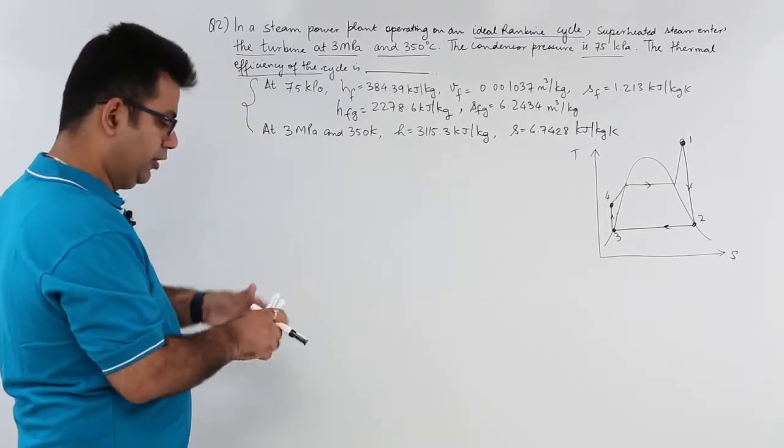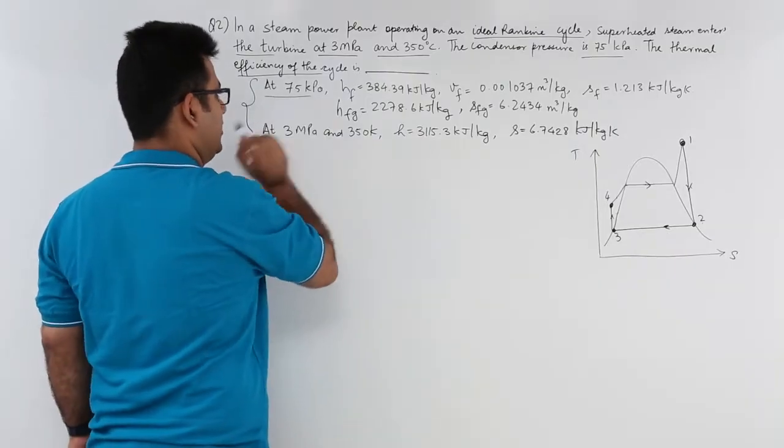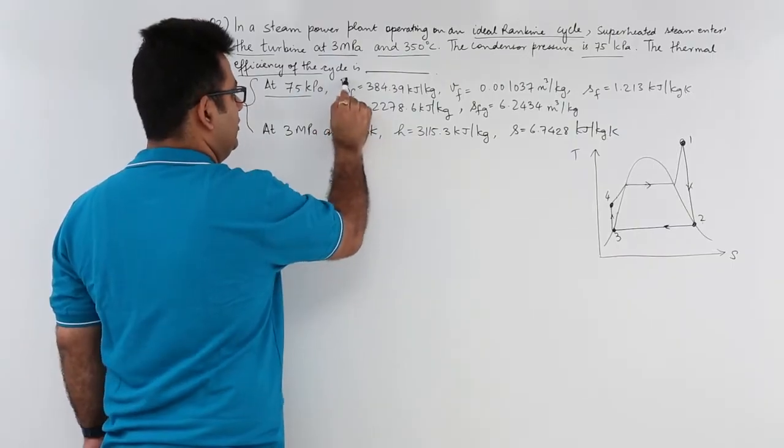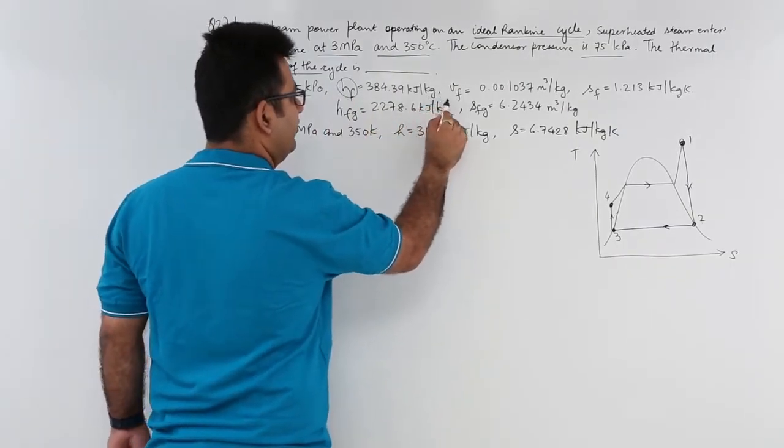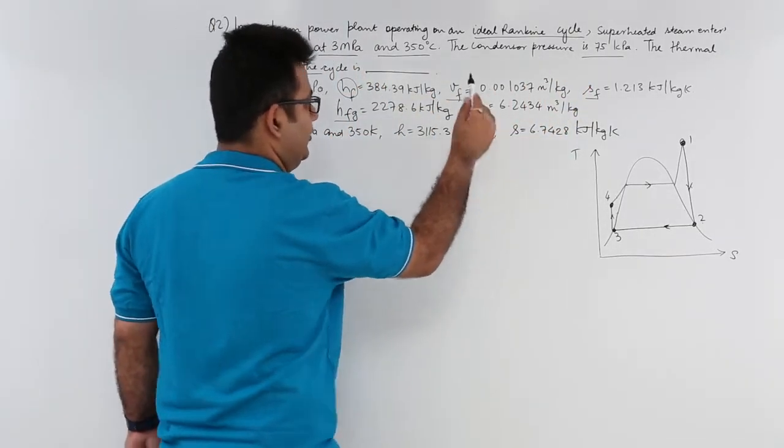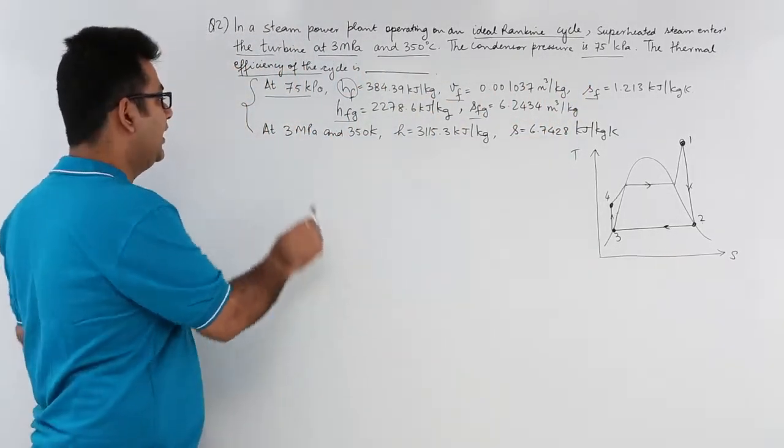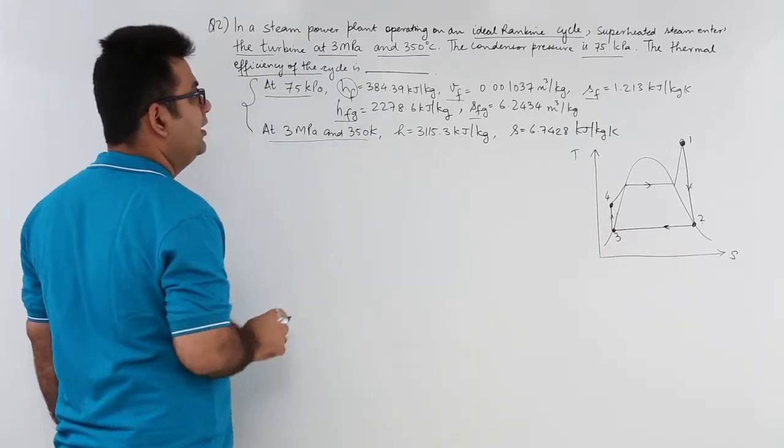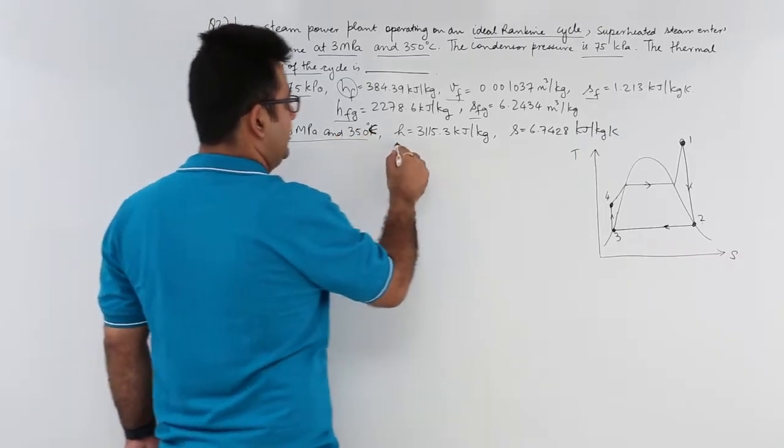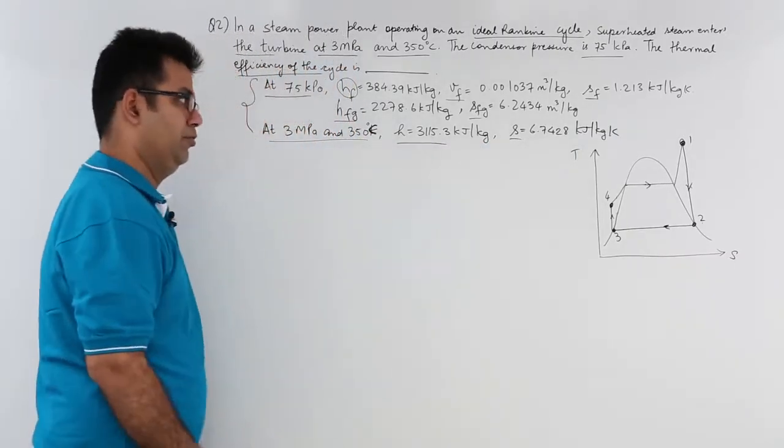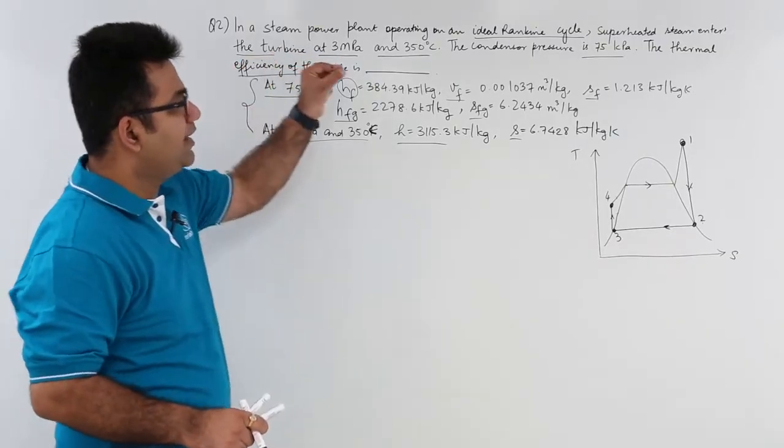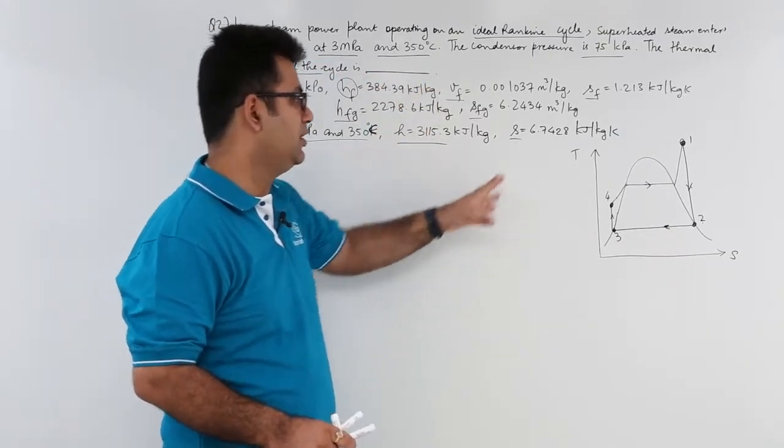So this is the data given to you at 75 KPa pressure. These are the steam properties. You have HF, VF, SF, HFG and SFG. At 3 MPa and 350 degree Celsius, enthalpy and entropy is also given to you. Now if you look at the ideal Rankine cycle TS plot, this is how it looks like.